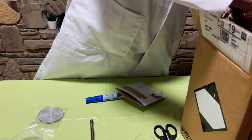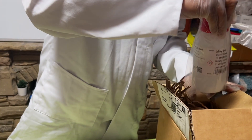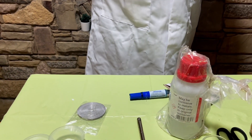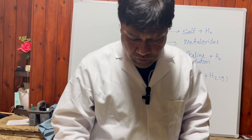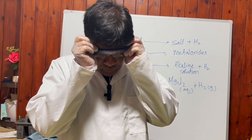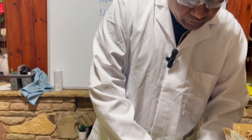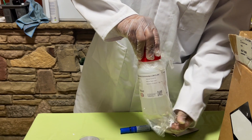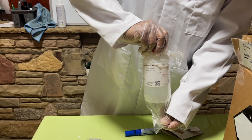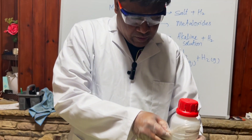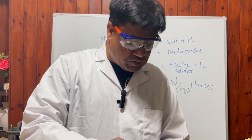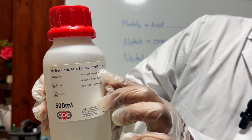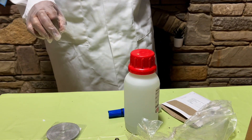You have to be careful when dealing with hydrochloric acid in the lab. Always wear your gloves, goggles, and lab coat — safety is very important. I'm using one molar hydrochloric acid. One molar is a strong concentration. I know this is the acid from the label — it says hydrochloric acid, concentration one molar. Normal and molar are the same thing.